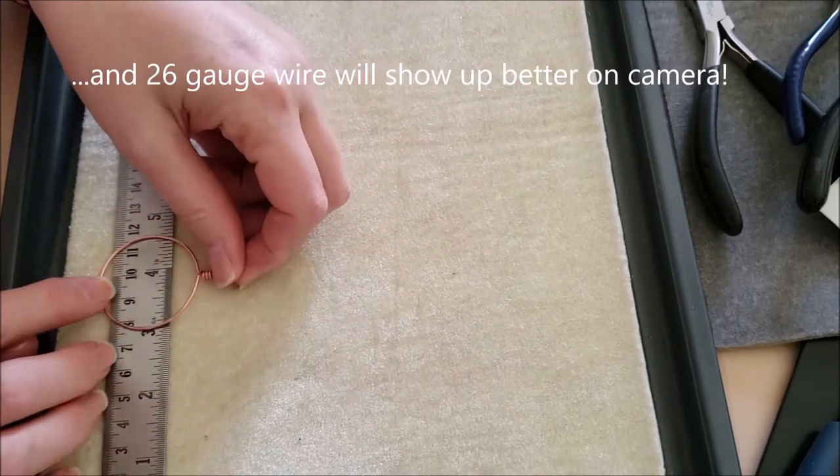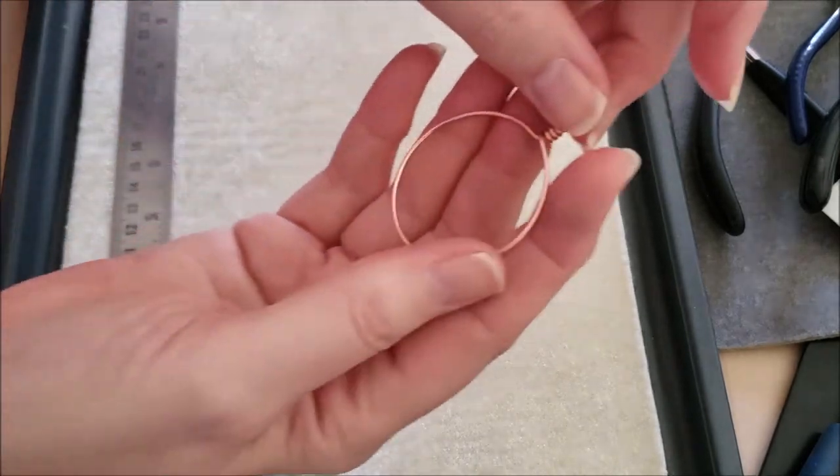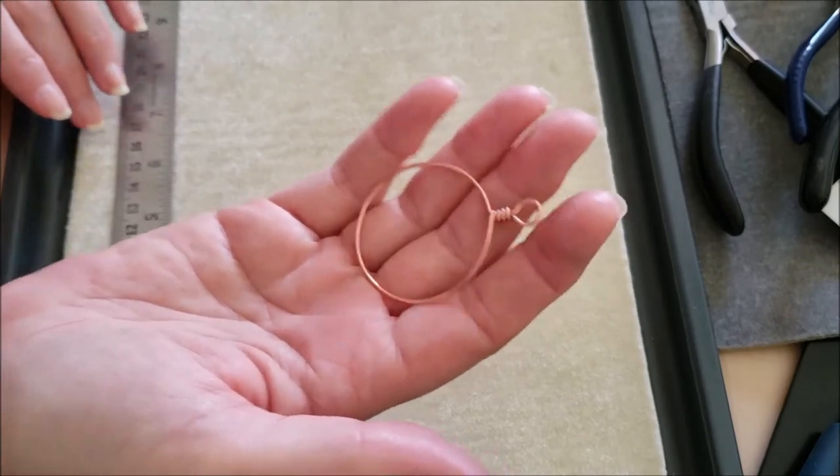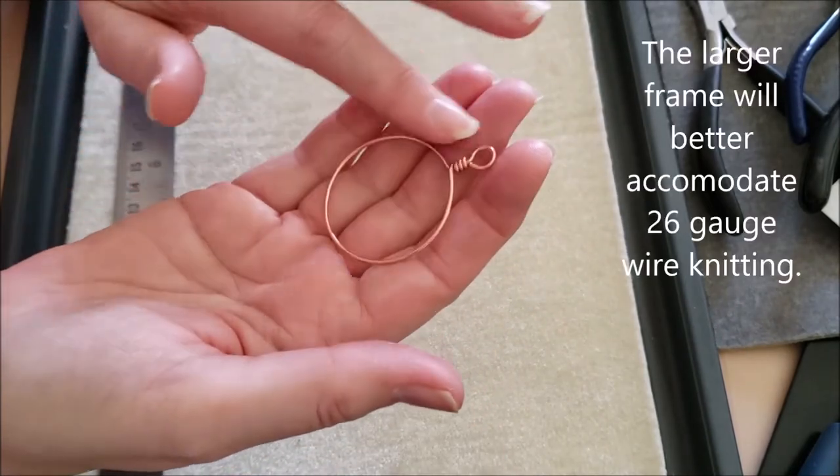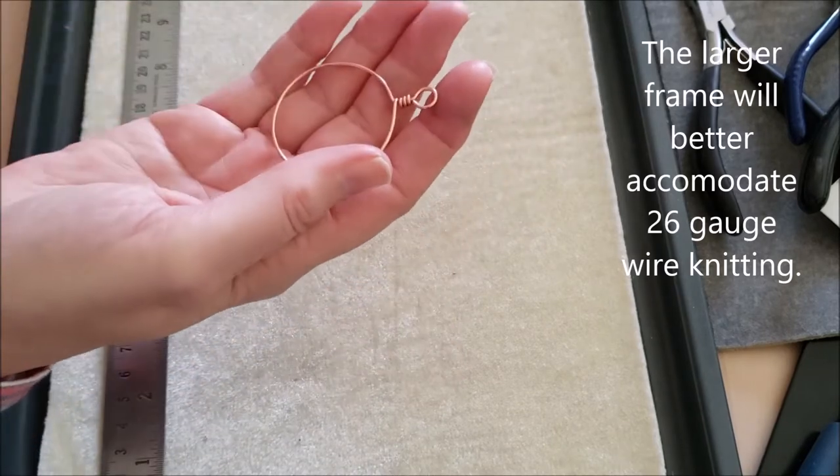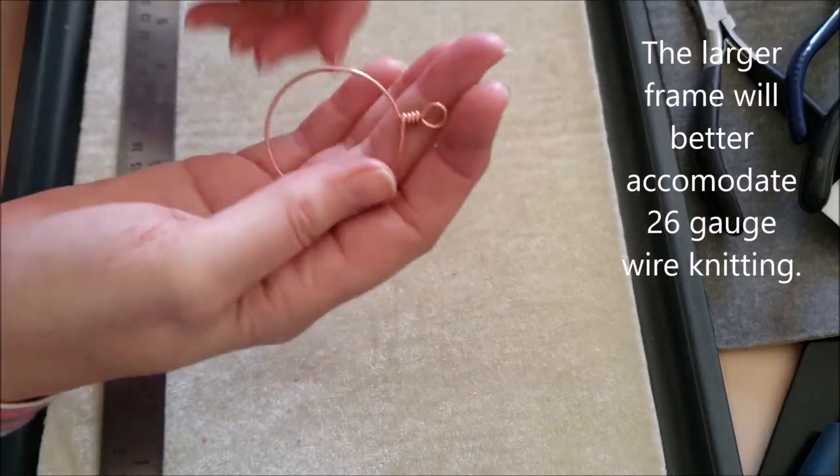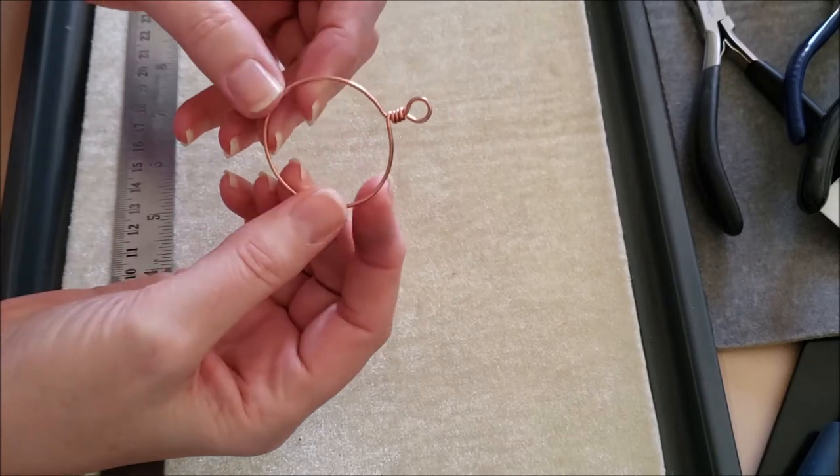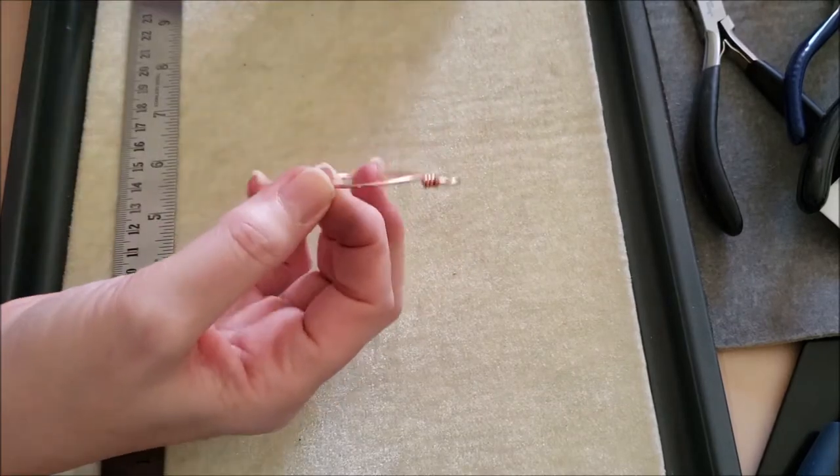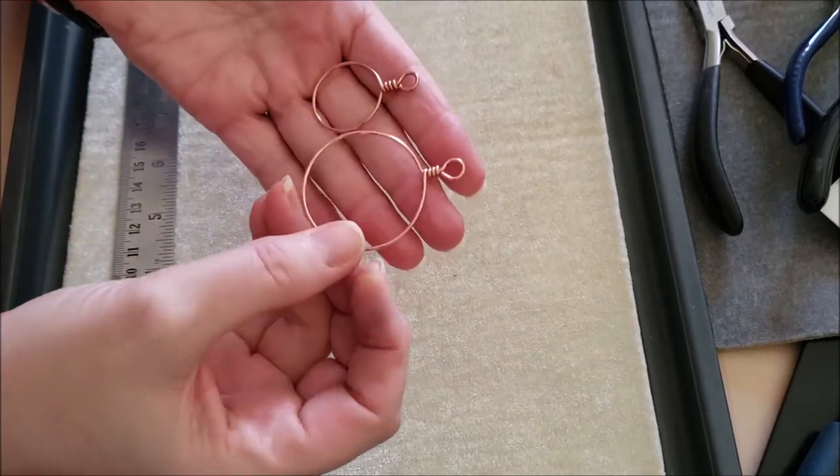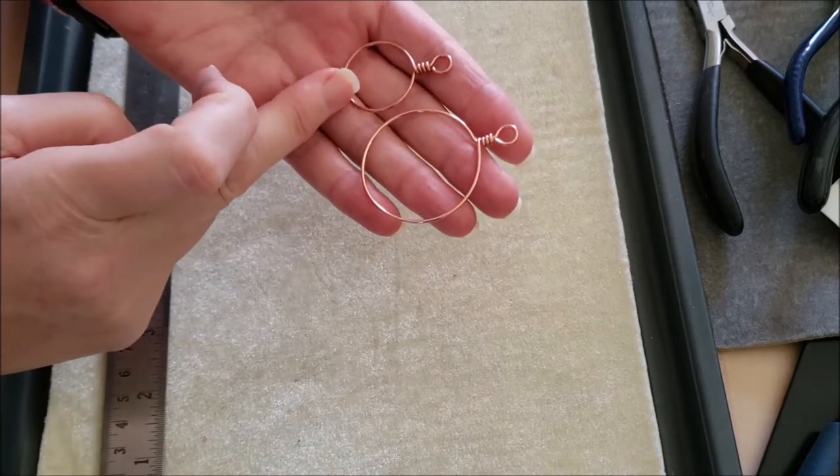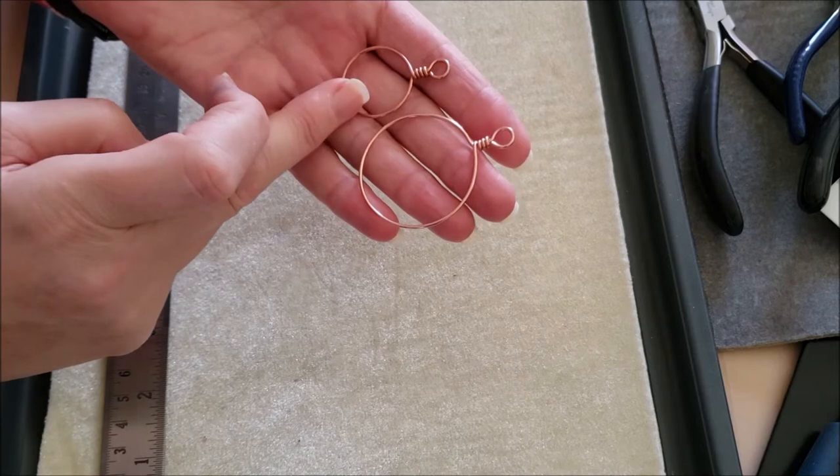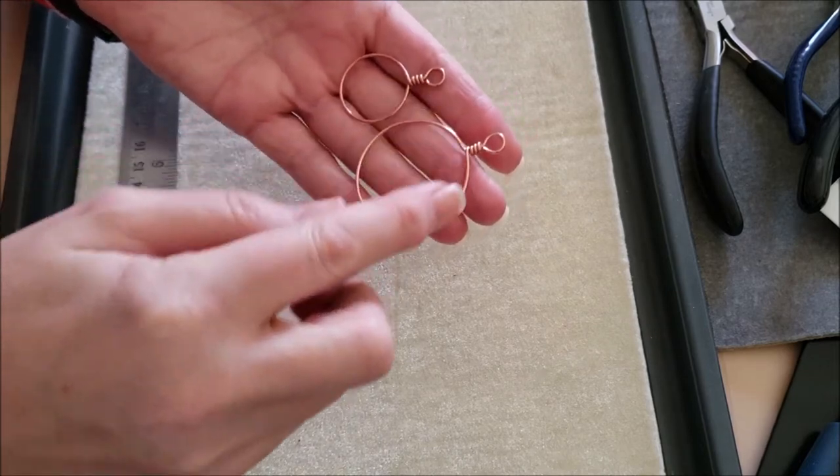So I've sized up the frame. This is about an inch and a half in diameter. That's about as big as I would go using 16 gauge wire, which is the gauge wire I've used to make the frame and that I'm going to show you how to make in a couple of minutes.